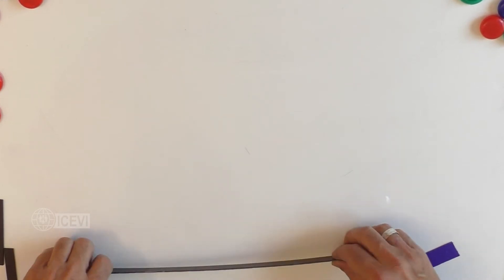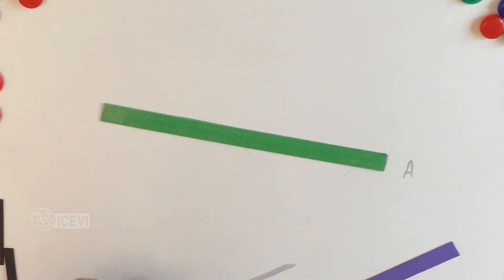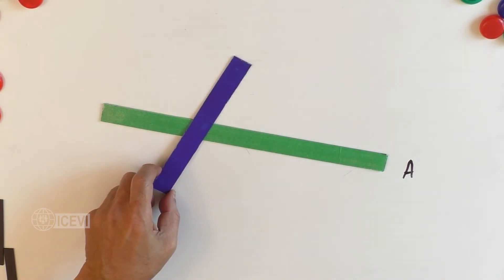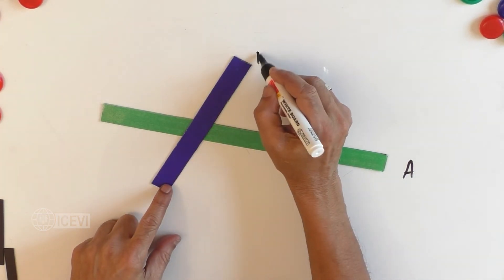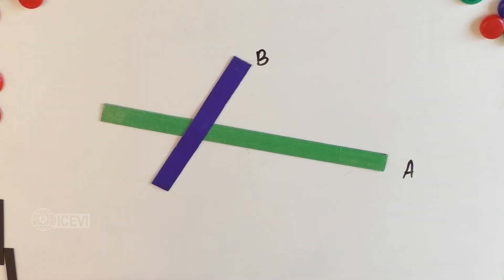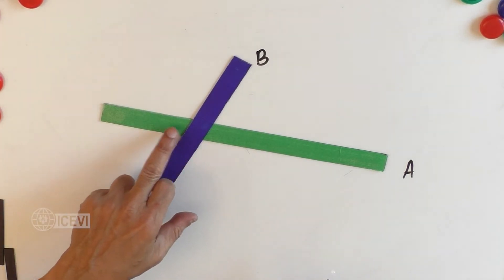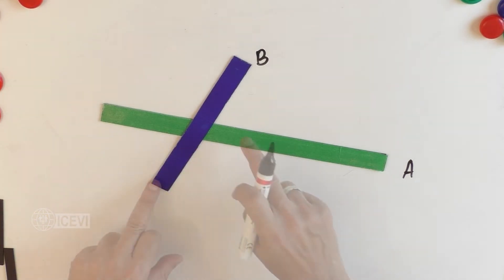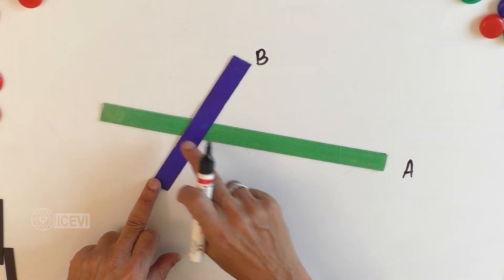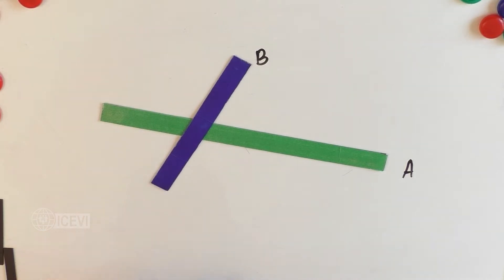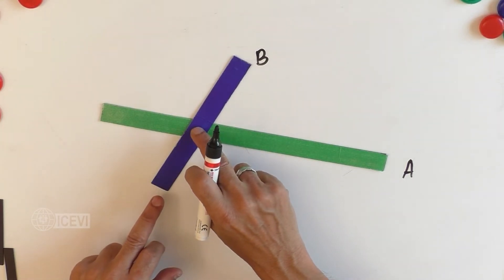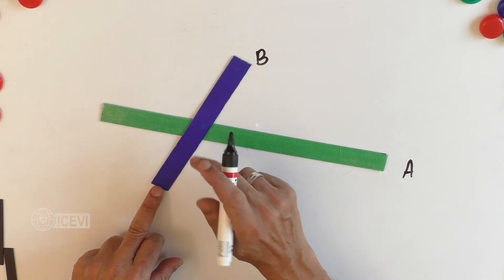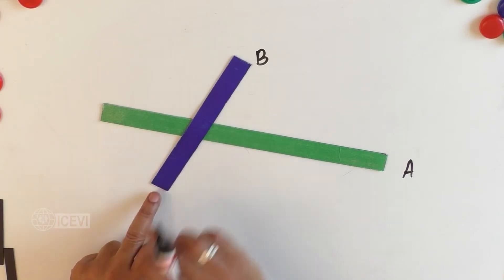Let us take a line, line A. Now let us take line B, which is going through line A. These two lines are called intersecting lines, because one line is going through the other line. The point at which the lines are meeting is called the point of intersection.